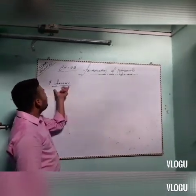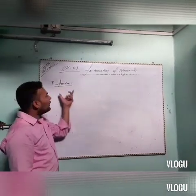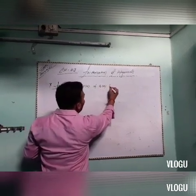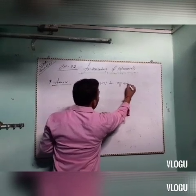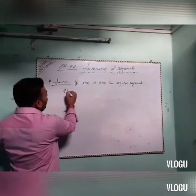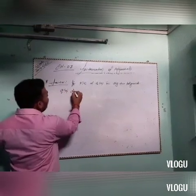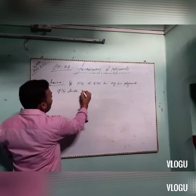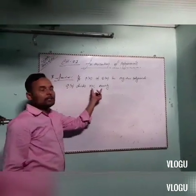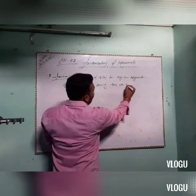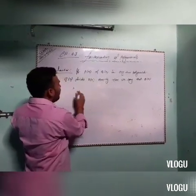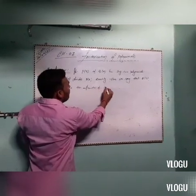First of all, let us know about factors and factorization. What is a factor? If P(x) and Q(x) are any two polynomials, and Q(x) divides P(x) exactly, then we say that Q(x) is the factor of P(x).